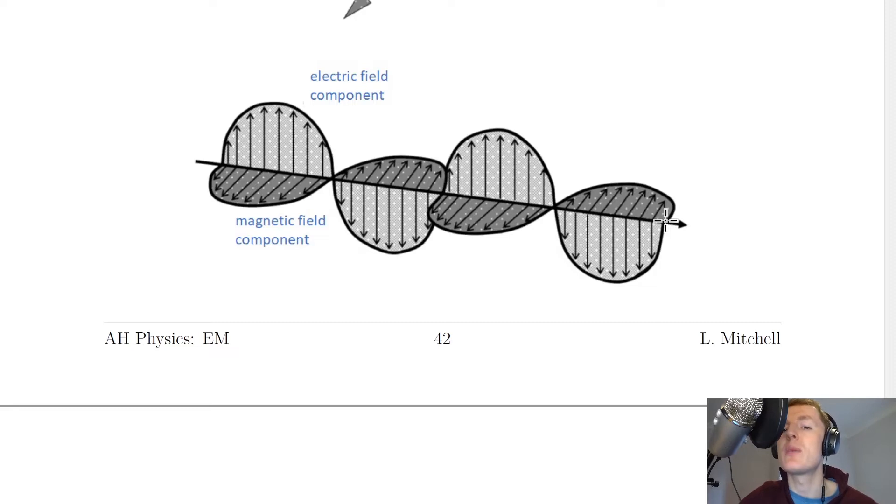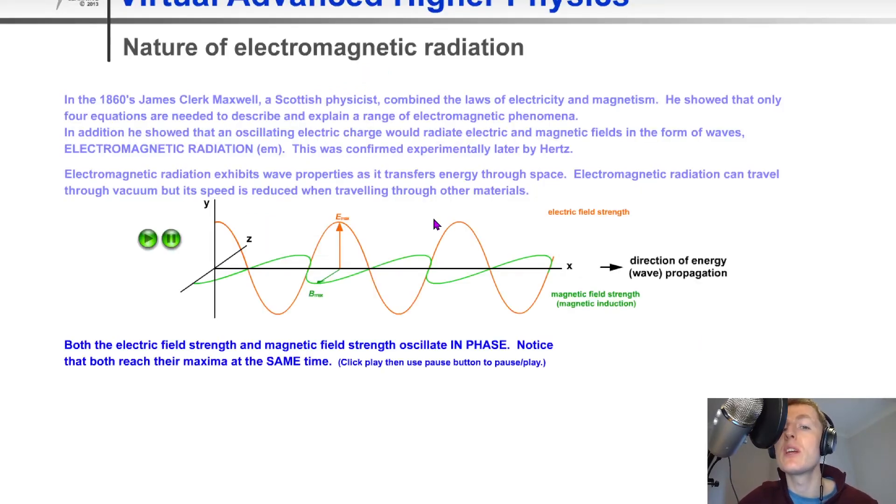I'm just going to show you a quick simulation to help you visualize this. Here we have a wave with the electric field strength moving in the y-axis, the magnetic field strength moving in the z-axis, and the direction of wave propagation moving along the x-axis.